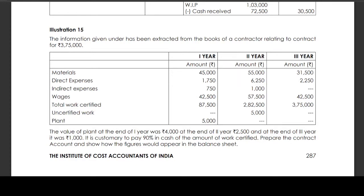The information given has been extracted from the books of contract relating to a contract for Rs. 3,25,000. Material for the first year is Rs. 45,000, direct labor for the first year is Rs. 1,750, direct expenses for the first year, total work certified is Rs. 87,500, and plant is Rs. 5,000.